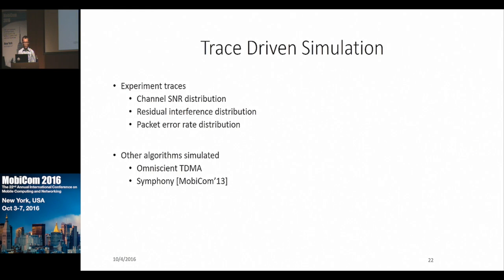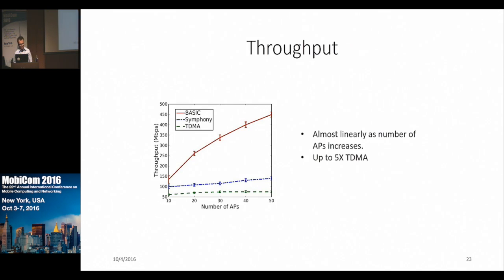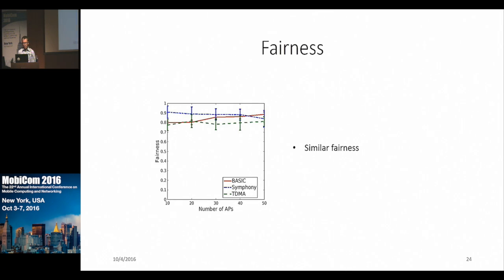We also ran simulations to evaluate a very large network, using experimentally collected traces for SNR distribution, residual interference — the interference that remains even after cancelling a packet — and packet error rate distribution. We compared TDMA, Symphony, and our protocol. As the network size grows, the throughput of BASIC increases and can be as high as five times that of TDMA. In terms of fairness, TDMA, Symphony, and our protocol all perform similarly.